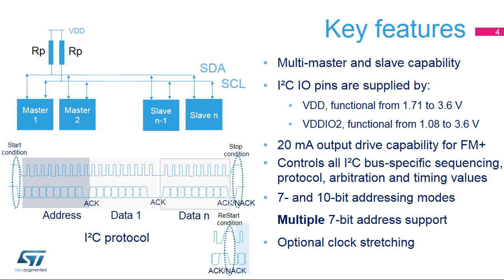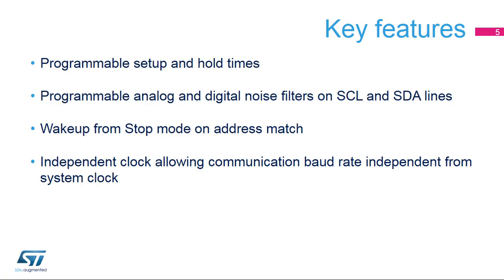A typical use case is communication with an application processor in sensor hub applications. The I2C IO pins support the 20mA output drive required for Fast Mode Plus. The peripheral controls all I2C bus-specific sequencing, protocol, arbitration, and timing values. 7- and 10-bit addressing modes are supported, and multiple 7-bit addresses can be supported in the same application. The peripheral supports slave clock stretching, and clock stretching from slave can be disabled by software. The setup and hold times are programmable by software. Analog and digital glitch filters on the data and clock lines can be configured by software. The peripheral can wake up the MCU from stop mode when an address match is detected, and it has an independent clock domain allowing a communication baud rate independent from the system clock.